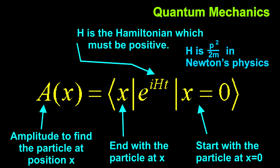You may remember from your beginning physics class that h was p squared over 2m in Newton's physics. We don't actually care what particular form h has, just that it's positive.